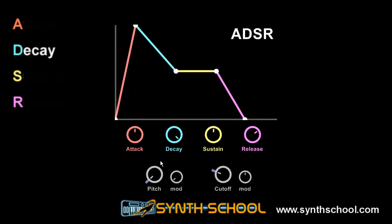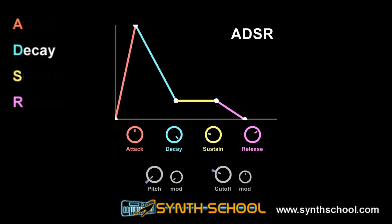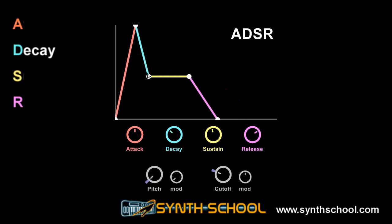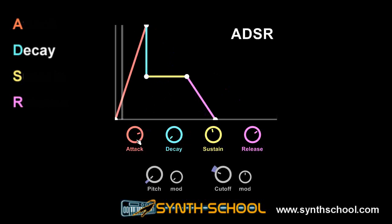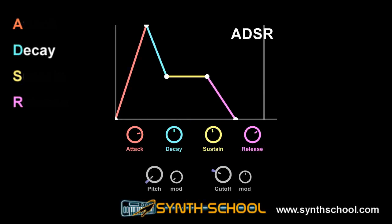The decay stage switches in once the attack is finished, and it describes the time it takes to gradually fade from the maximum position — which is the end of the attack stage — to the level of the sustain. A short decay will result in a fast drop to the sustain level once the attack stage has finished. A long decay will slowly fade to the sustain level.